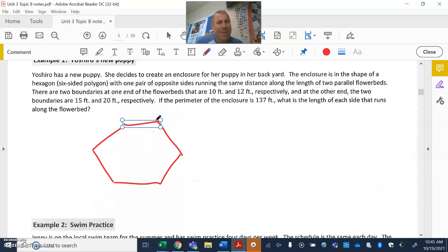At the other end, the two boundaries are 15 and 20 respectively. The perimeter is 137. A lot of times the first time you're reading maybe you get something down, but then you go through it the second or third time you really start putting things together. I don't know what the opposite sides are, but I know that they are the same.